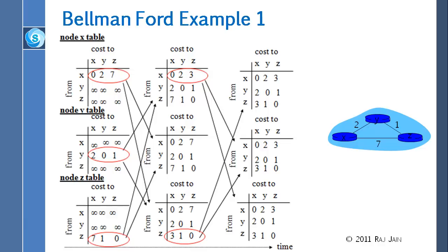Y does the calculation and sees whether it can reach x any cheaper via z — no. Can it reach z any cheaper via x — no. So it doesn't change anything. Z does the calculation and finds it can reach x via y much cheaper than going directly, so its cost changes from 7 to 3, giving the table 3, 1, 0.